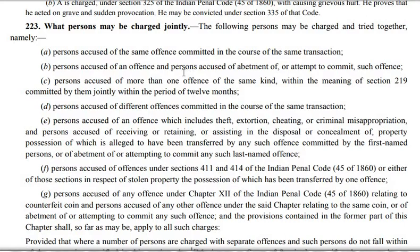Clause B: persons accused of an offense and persons accused of abatement of or attempt to commit such offense. In the same transaction they can be tried together. One person committed the offense, another person abated, and a third one in the same transaction attempted to commit that offense — they all can be tried together. The abettor and the main offender can be tried together, and the person who attempts to commit that offense can also be tried together, if it is done in the same transaction. Abatement can also be done before, and in the same transaction later on.